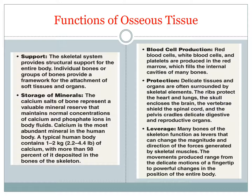The ribs protect the heart and lungs, the skull encloses the brain, the vertebrae shield the spinal cord, and the pelvis cradles delicate urinary and reproductive organs. Another function of the skeletal system is leverage. Many bones of the skeleton function as levers that can change the magnitude and direction of the forces generated by skeletal muscles. The movements produced range from the delicate motions of a fingertip to powerful changes in the position of the entire body.